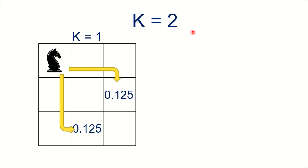For k equal to 2, let us work out how this can be achieved. The Knight's original position is at the 0th index, and the probability at this place — that is at k equal to 0 where no steps were taken — is 1, because the Knight is within the board. So probability is 1 for this position.